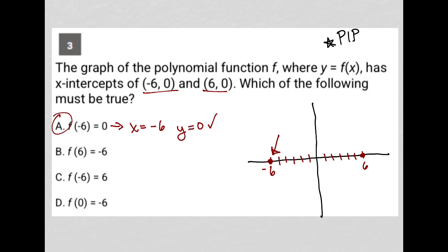But let's check the other ones. f of 6 equals negative 6. Well, that means when x equals 6, y would equal negative 6, which would take us down here. So, that's not true.